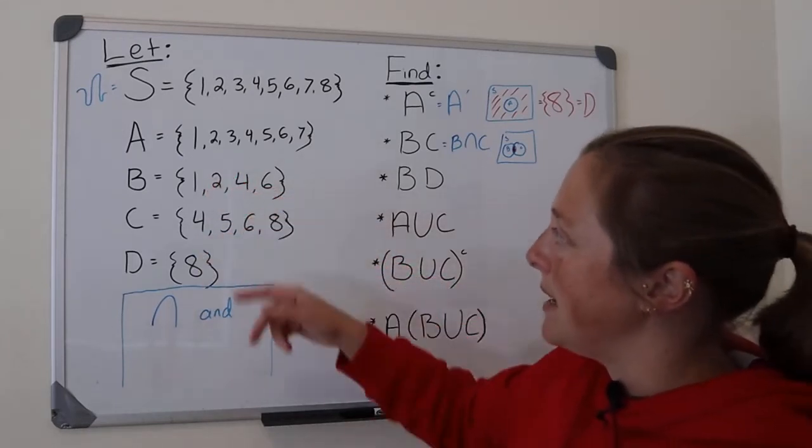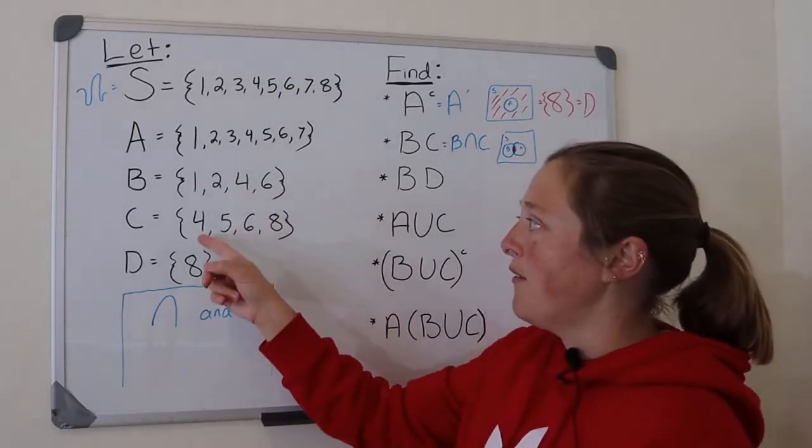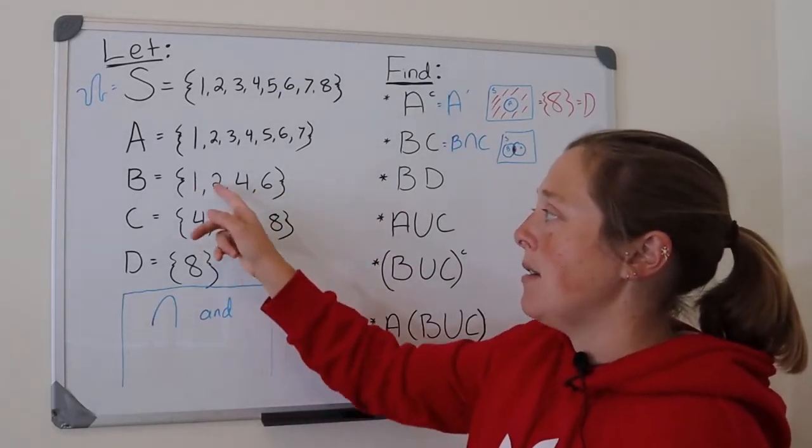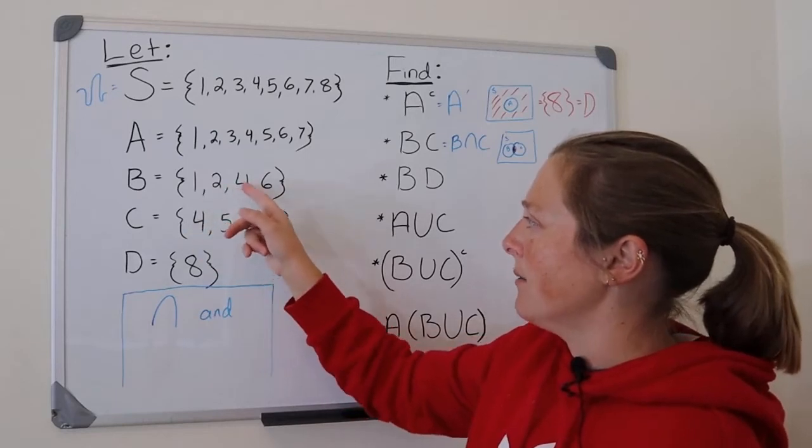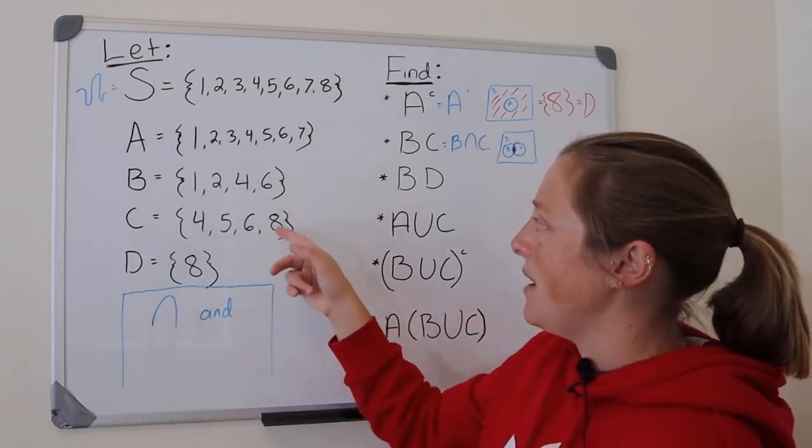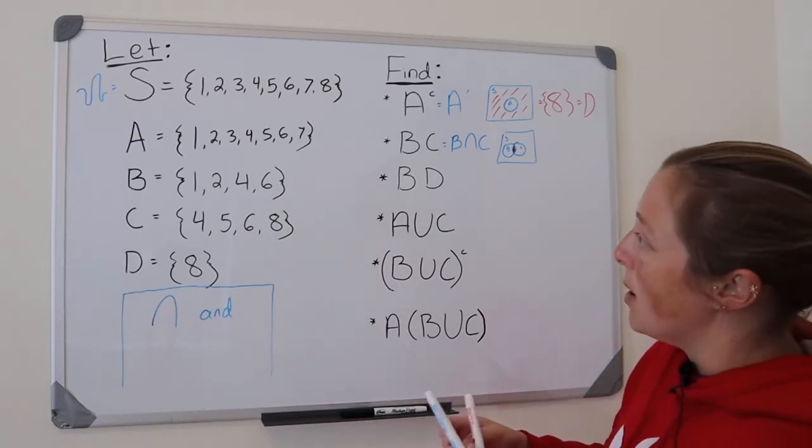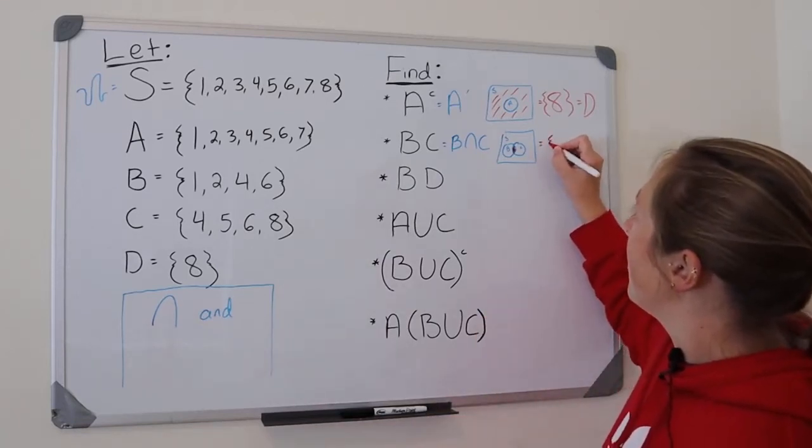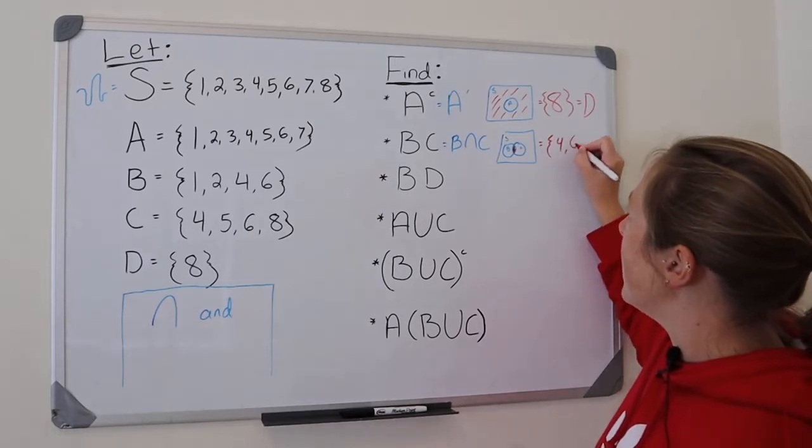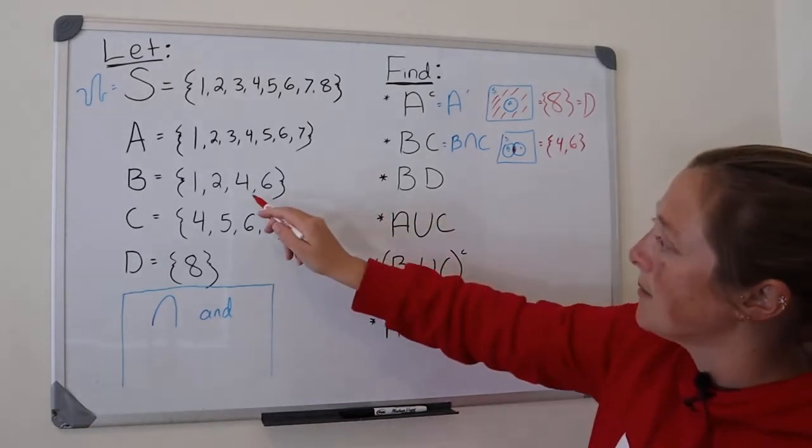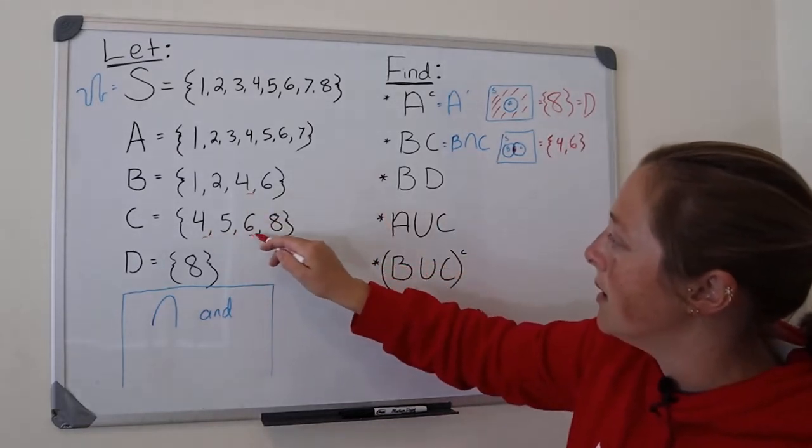So what is in both B and C? Looks like four and six. One, four, or sorry, one, two, five, and eight are not in both. So the only elements that are in both are four and six.